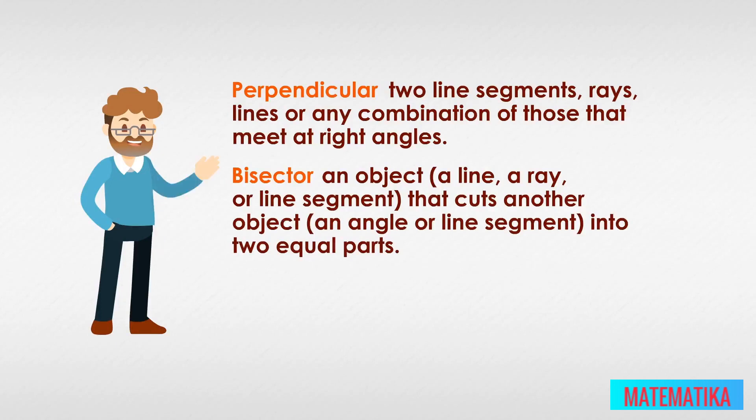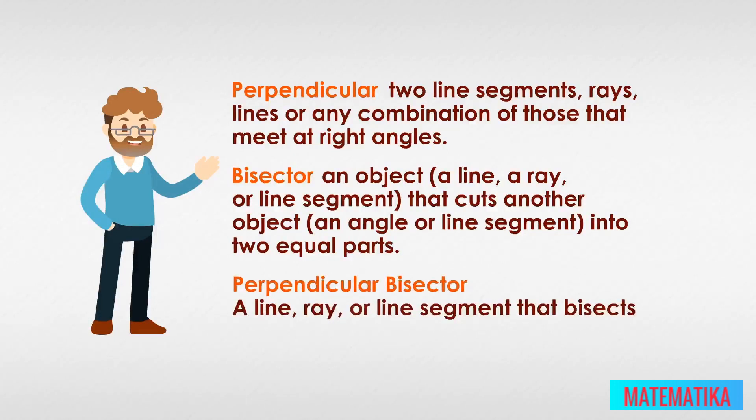Putting the two meanings together, we get the concept of a perpendicular bisector: a line, ray, or line segment that bisects an angle or line segment at a right angle.